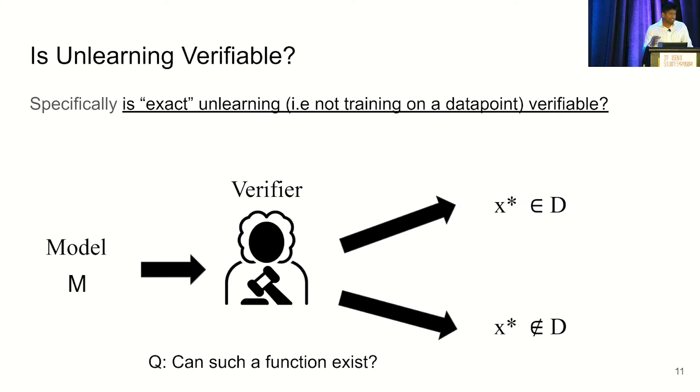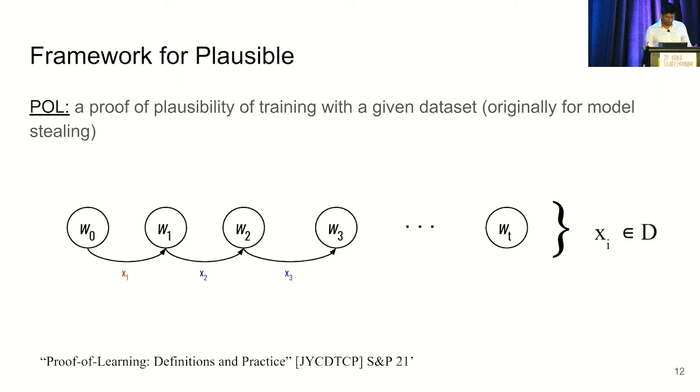Now with an idea of the main questions that we have when implementing unlearning, we can ask what it might mean to verify unlearning. And in this paper, we specifically talk about exact unlearning, which, as I discussed, is essentially retraining. And the framework we have in mind is that we have a model, really a proof associated to a model. And there's some verifier that could either determine if we had trained on a data point or had not trained on a data point. So really, we're asking, could this verifier exist?